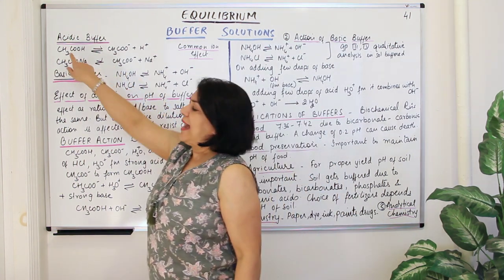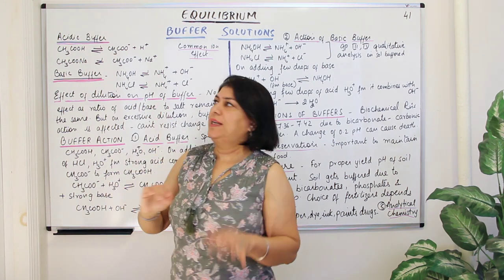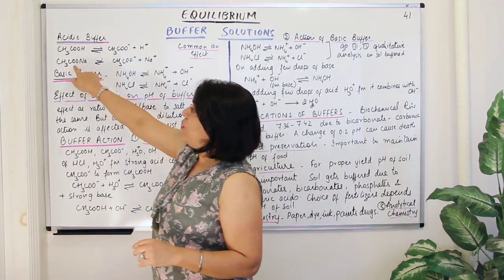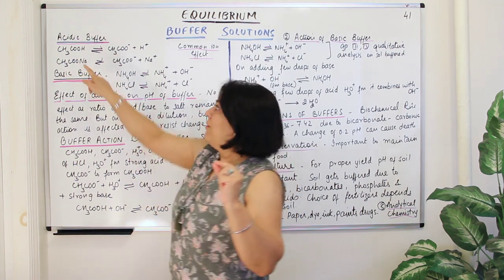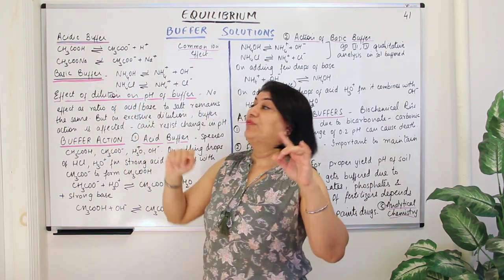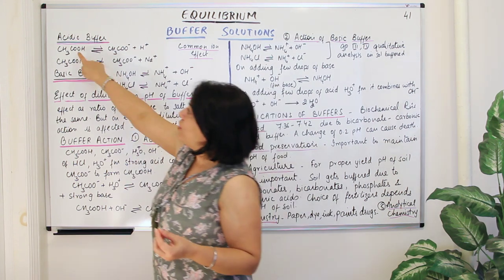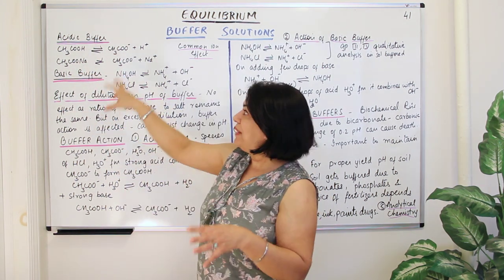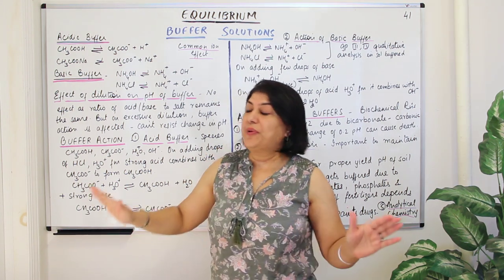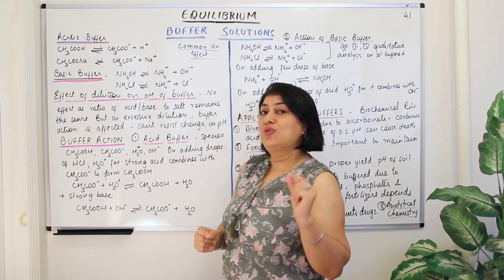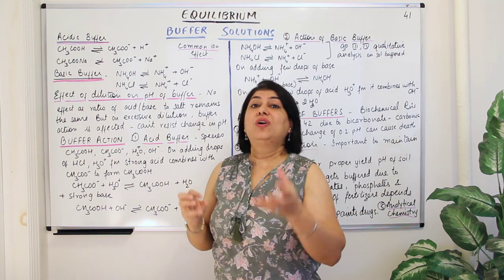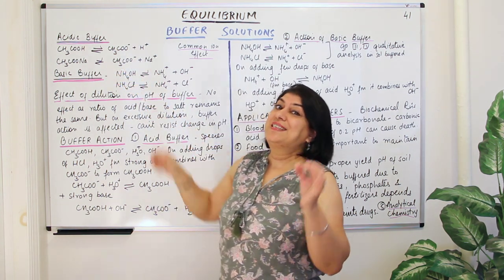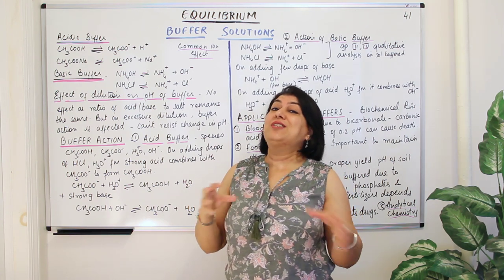When acetic acid is placed in water, it dissociates partially into acetate ion (CH3COO⁻) and H⁺ (H3O⁺) because it is a weak acid. Sodium acetate is the salt formed from acetic acid and sodium hydroxide. When this salt is added to water it dissociates completely into acetate ion and sodium ion. The sodium ion remains hydrated in solution, but the acetate ion, being weak, has a tendency to cause hydrolysis.